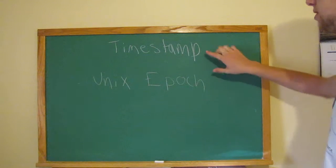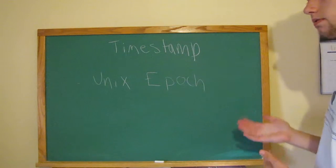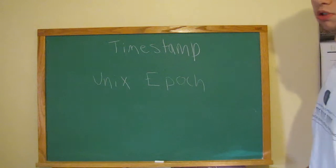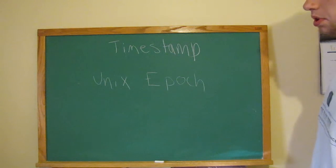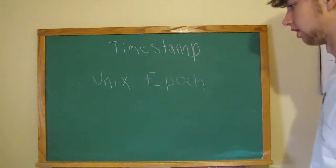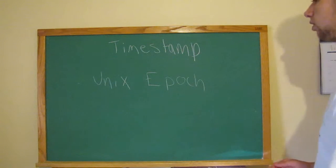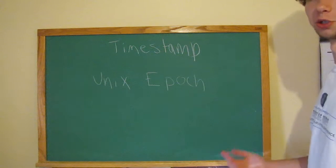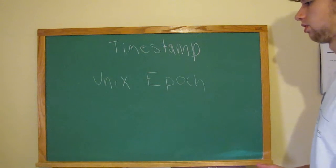The last one on the list was timestamp, which is basically an amount of seconds since what they call the Unix Epoch, which was in 1970. The number is pretty big now, but basically when you do a timestamp it will take the time from your server or your computer and convert it to UTC.